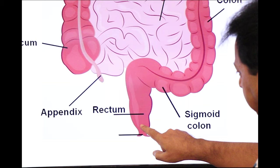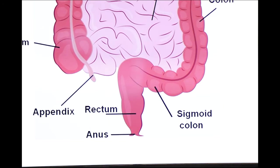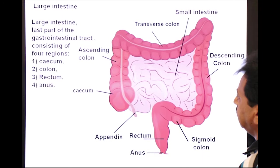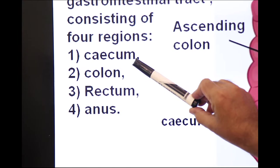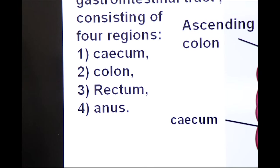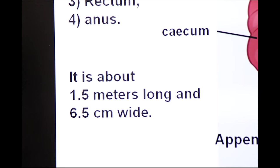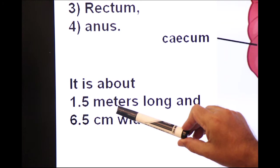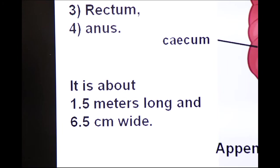Rectum opens into anal canal and ends in anus. So these are the parts of large intestine. Let's start from the first part of the large intestine known as cecum. And before discussing cecum, what is the size of large intestine? It is 1.5 meters long and 6.5 centimeters wide.